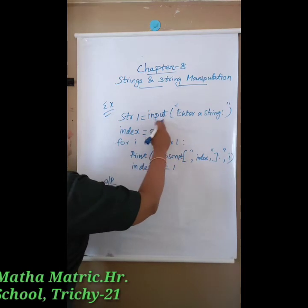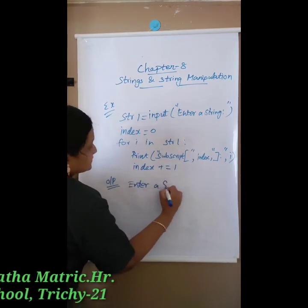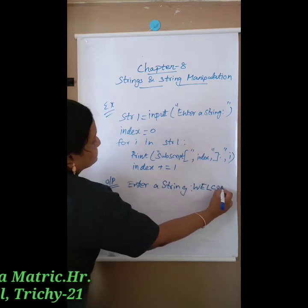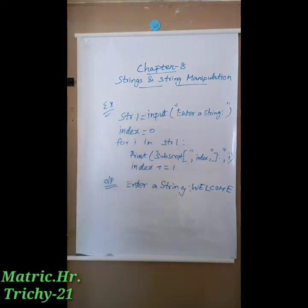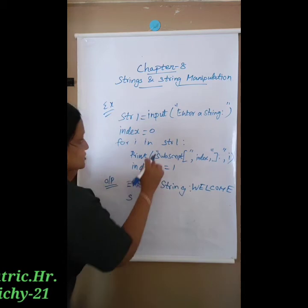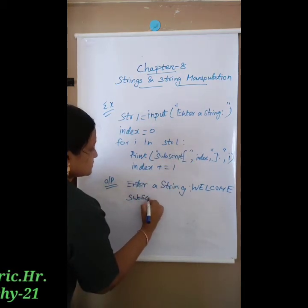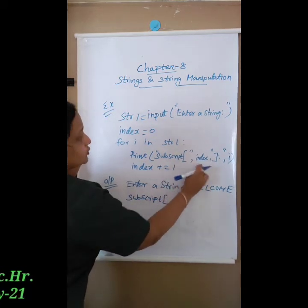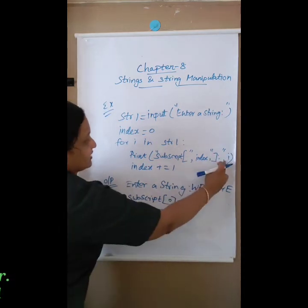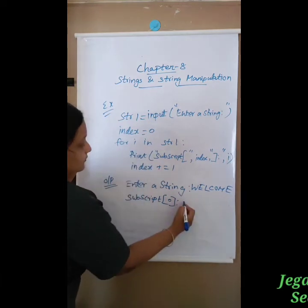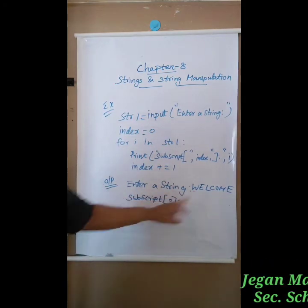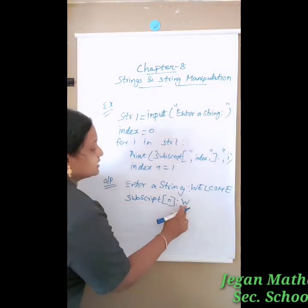Let us process the output. The first line asks: enter a string. We type 'welcome'. The first time, index value is 0, so it prints: subscript[0]: w. Then index increments to 1, printing subscript[1]: e. Then subscript[2]: l, subscript[3]: c, subscript[4]: o.